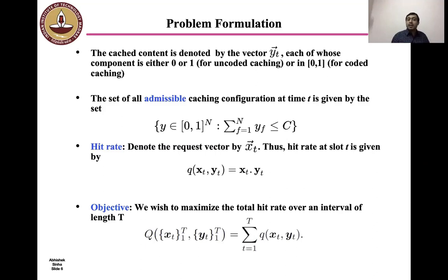The set of all admissible caching configuration at time t is given by the set of all y in [0,1]^n such that sum of yf is upper bounded by C. This simply represents the caching capacity constraint. Since the cache has capacity of C, you can't store more than C files coded or uncoded per slot.